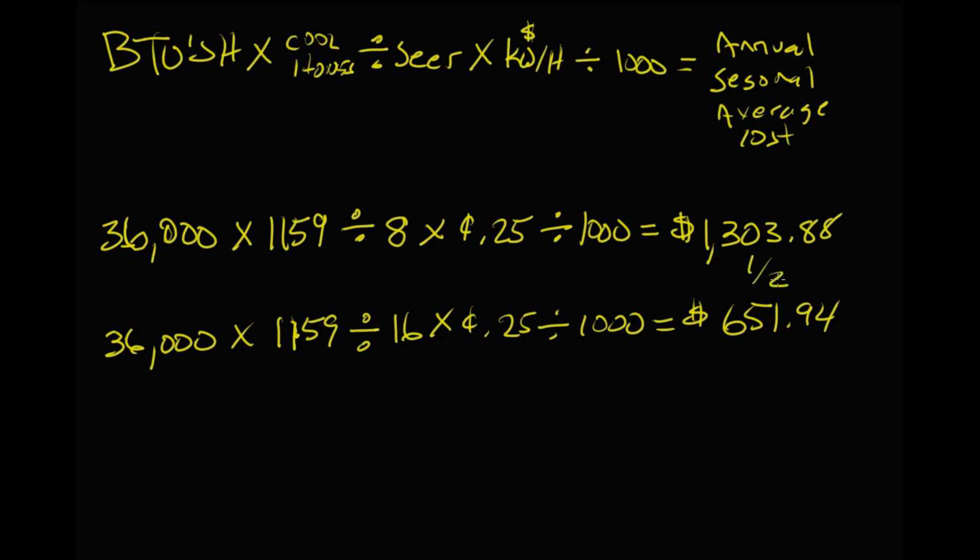That is half of the $1303.88. Remember how I said that this is the 8 SEER. Whenever you double it, or if you go from an 8 to a 16, you're actually consuming half the energy. So it's costing half as much to run that piece of equipment. If you take it one step further and you subtract the amount from what you were doing, how much are you actually saving? Well, you're saving $651.94 every season by just changing this piece of equipment out to a 16 SEER.